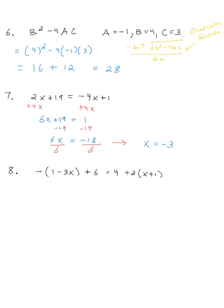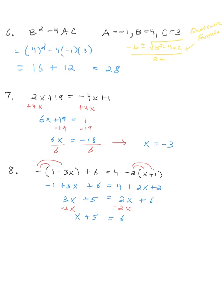For this linear equation, I'll first distribute and then combine like terms. The negative 1 gets multiplied to both terms, and that 2 gets multiplied to those, giving me negative 1 plus 3x, then plus 6, equal to 4 plus 2x plus 2. Combining like terms on the left I get 3x plus 5, equal to 2x plus 6. Subtracting 2x from both sides gives me x plus 5 equals 6 on the right. After subtracting 5, I get my answer of x is equal to 1.